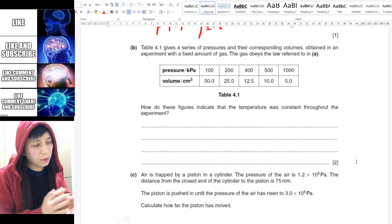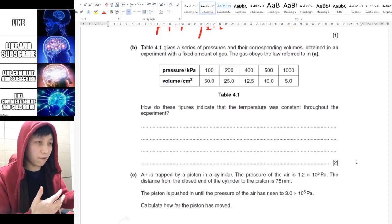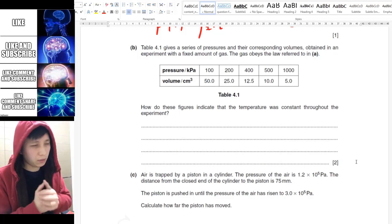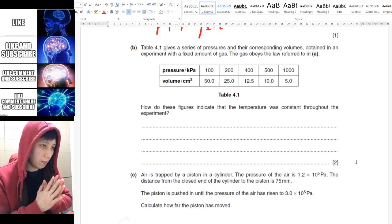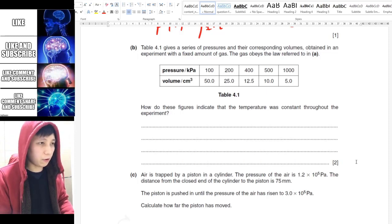So for Part B, they give you some data. Just imagine these are the data that you have got from the virtual lab, the Boyle's law simulation that you did earlier. The question is asking you how can you tell from the data that the temperature was constant throughout the experiment.